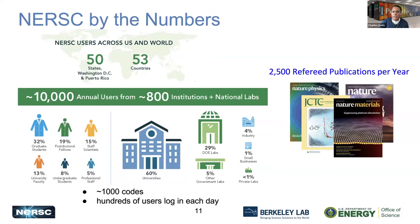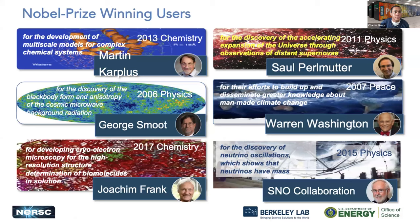NERSC by the numbers: we have over 10,000 users around the world across various institutions. A large part of our demographic leans towards students and postdoctoral researchers, but we serve all different types of users. At NERSC and at Berkeley Lab we do a lot of science — we have had numerous Nobel Prize-winning researchers and scientists here. Our goal is to help accelerate science, so hopefully one day one of you will be on this slide as well.